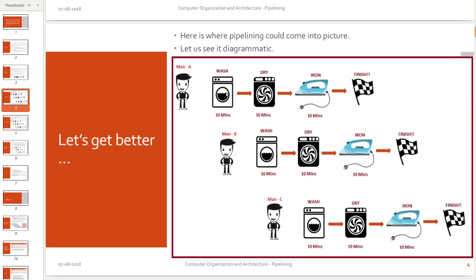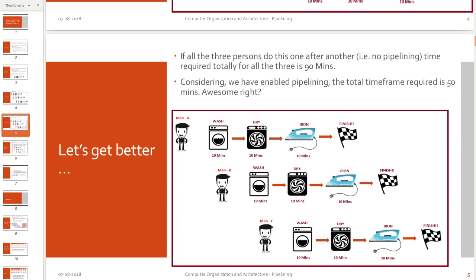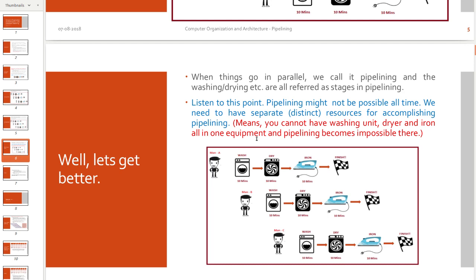So when one equipment is being used by a first instruction, it becomes free in the next stage. So the next instruction can use it. Man A is an instruction. Man B is an instruction. Man C is an instruction. Instruction A needs 30 minutes. Instruction B needs 30 minutes. Instruction C needs 30 minutes. But overall, when we have pipelining, you can see that 30 plus 10 extra plus 10 extra, it will end in 50 minutes. So pipelining is an art where you make sure that you enhance the throughput.